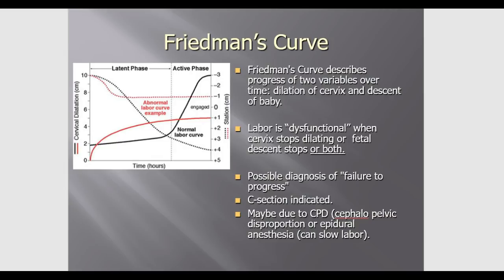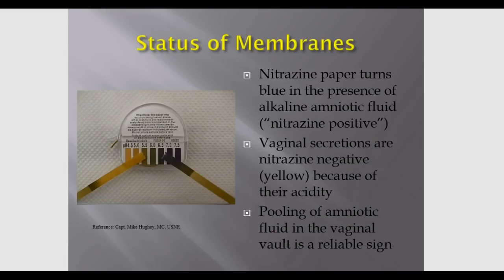Friedman's curve describes two variables: dilation of the cervix and fetal descent. An abnormal or dysfunctional curve occurs when the cervix stops dilating or the fetus stops descending. This can be due to cephalopelvic disproportion (CPD), meaning the baby's head is not fitting through mom's bony pelvis, or other reasons.